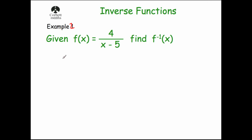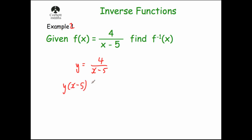Example two: given f(x) = 4 / (x − 5), find f⁻¹(x). Again, let y = f(x), so y = 4 / (x − 5). We want to make x the subject, but x is in the denominator, so we multiply both sides by (x − 5), giving y(x − 5) = 4.